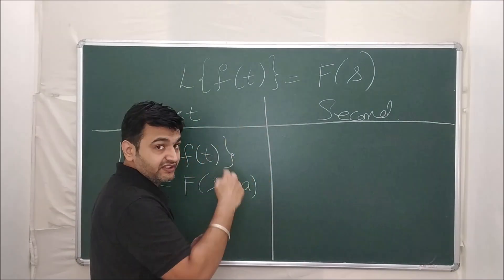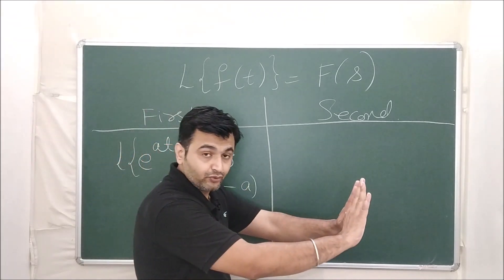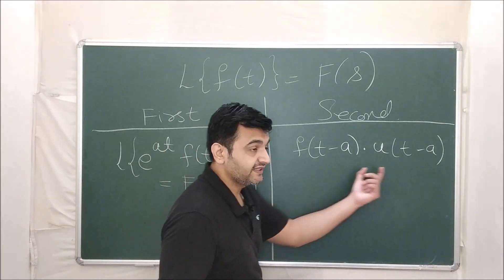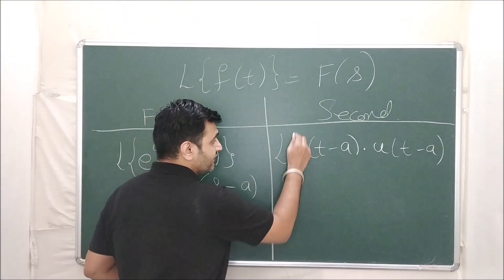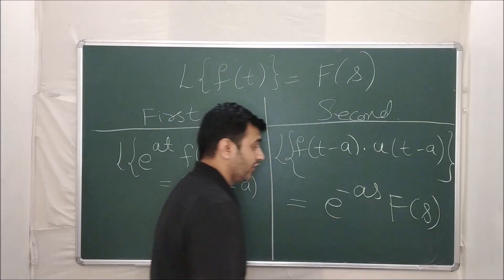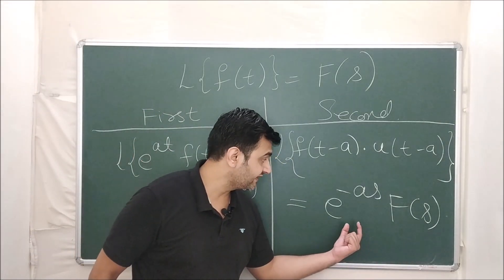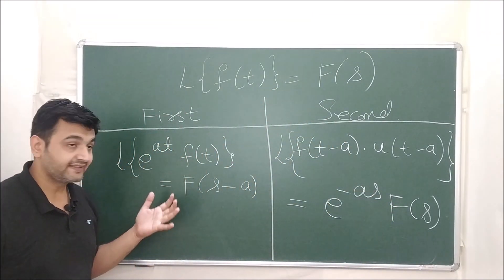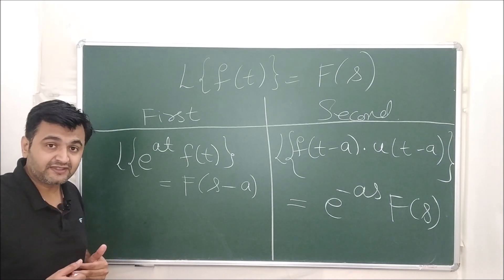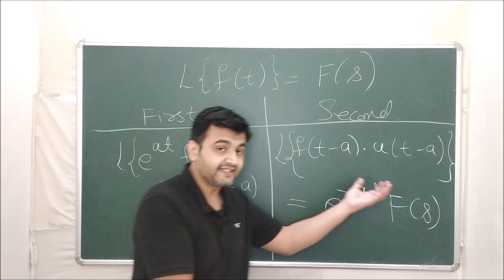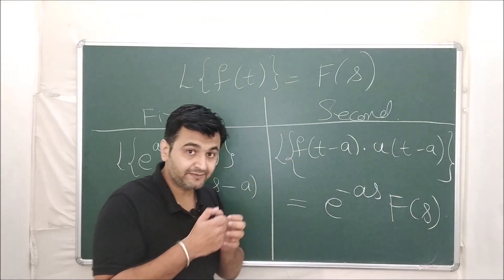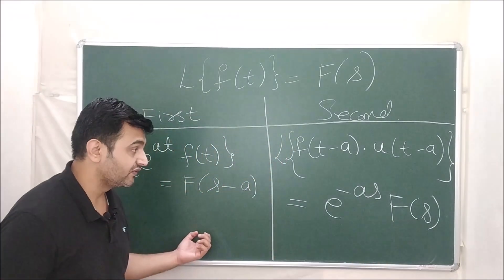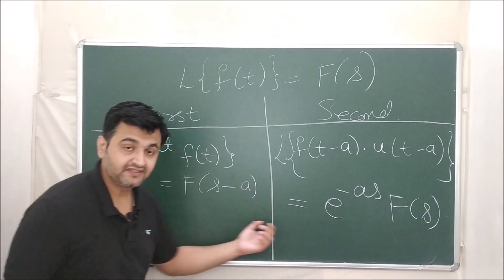If f(t) is a function and I want to shift it by a units to the right, the shifted function looks like f(t − a) · u(t − a). If you take the Laplace of this, it is e raised to minus as into the Laplace of the original function F(s). So: first shifting theorem — multiply by exponential in t space, get a shift in s space; second shifting theorem — shift in t space, multiply by exponential in s space.